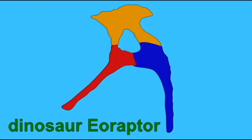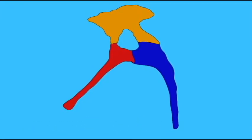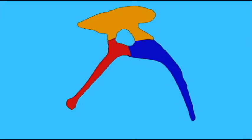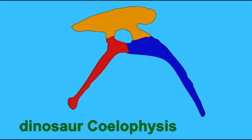This would become even larger in Lagosuchus, and by the time of Lagosuchus, the hip socket would actually begin to open, which was a condition we would find in the dinosaurs.